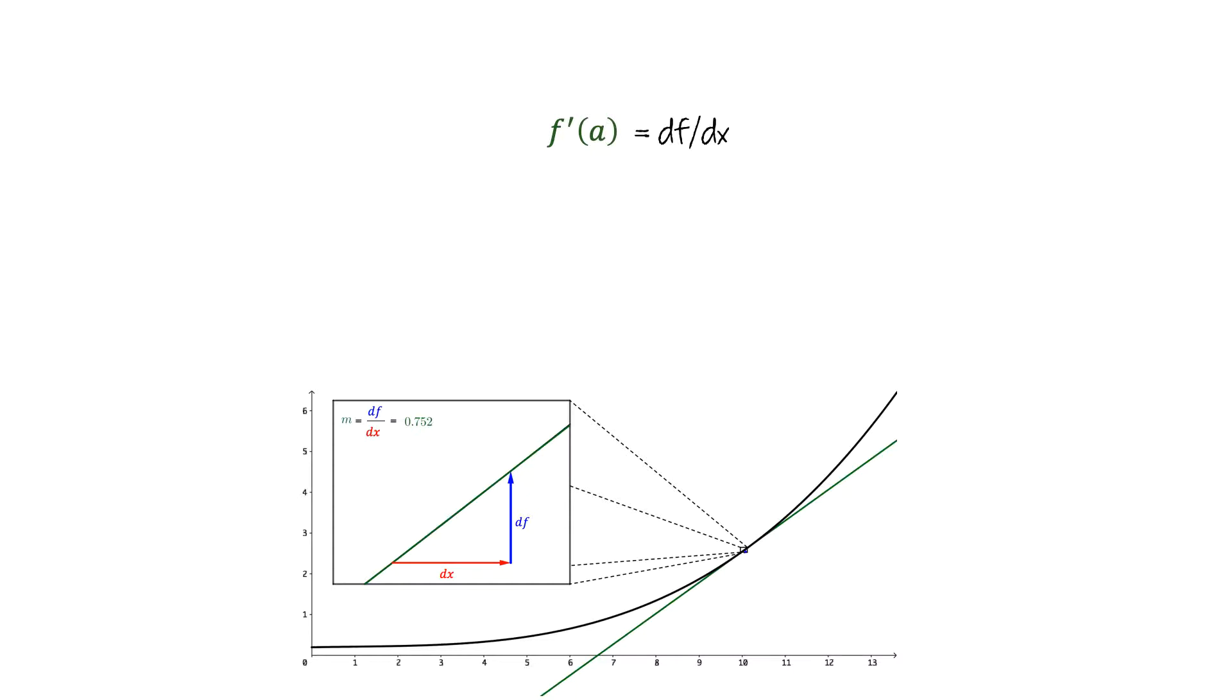So, over really small changes in x, the amount of change of f is f prime of a times as large as the amount of change of x. So we can label the length of the blue vertical arrow as f prime of a times as large as the length of the red arrow, dx.